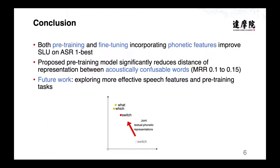In conclusion, we proved that both pre-training and fine-tuning incorporating phone features improved SLU. In probing experiments, we find the proposed pre-training model significantly reduced the distance of the representations between acoustically confusable words. The future work includes exploring more effective speech features and pre-training tasks. Thank you.